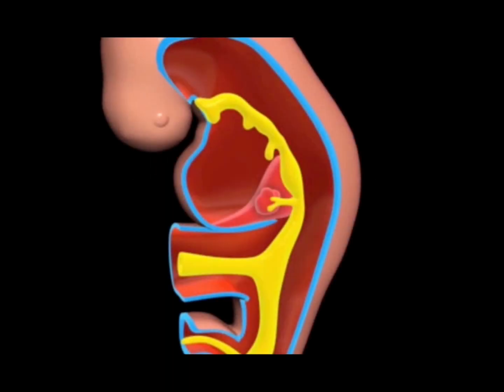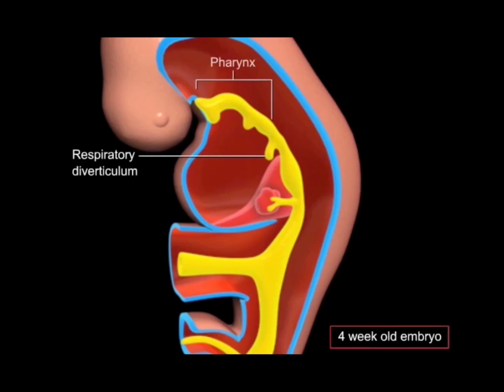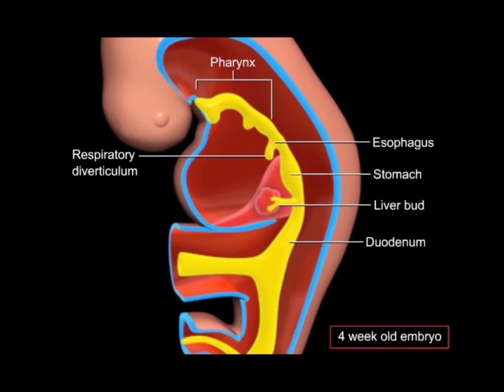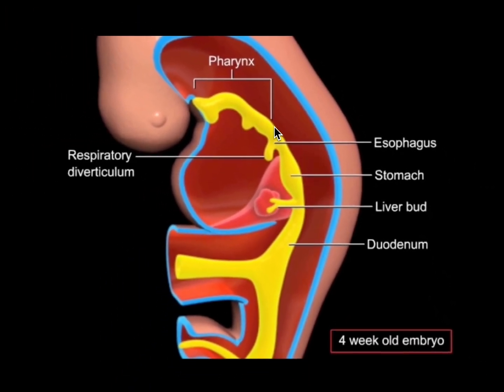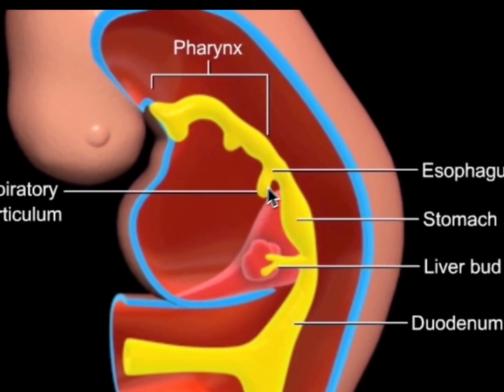Development of the foregut. Take a look at this mid-sagittal section of a four-week-old embryo. It shows the derivatives of the foregut and also the derivatives of the respiratory system cranially.